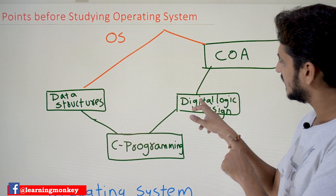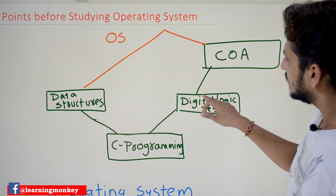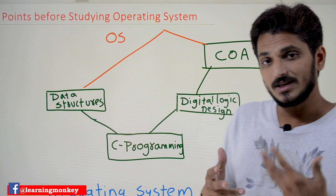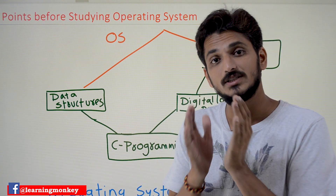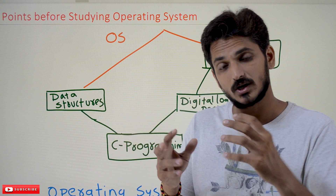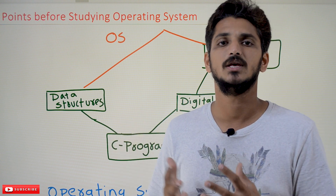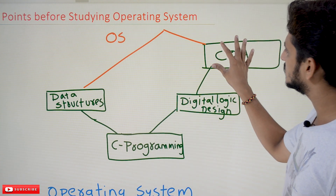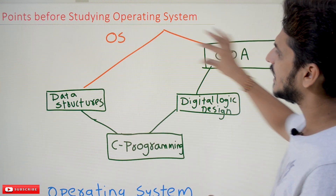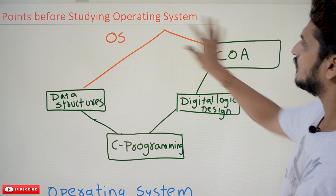That's why after C programming, one can start studying digital logic design to understand the hardware side. After digital logic design, one can study computer organization and architecture (COA). After COA, you'll have a clear understanding of what a processor means, how machine-level instructions execute, how memory is organized, how the processor connects with memory, and how I/O devices are interconnected. After completing data structures and COA, one can start studying operating system.